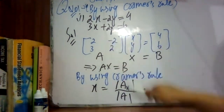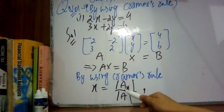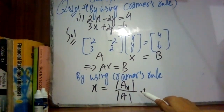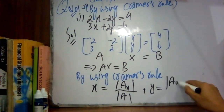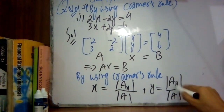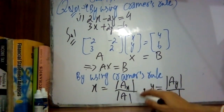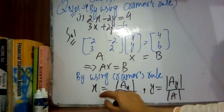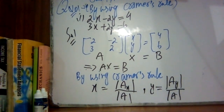You have to identify what Ax and Ay mean, and then divide the determinants to get values of x and y. The formula for Cramer's Rule: x equals the determinant of Ax divided by the determinant of A, and y equals the determinant of Ay divided by the determinant of A.